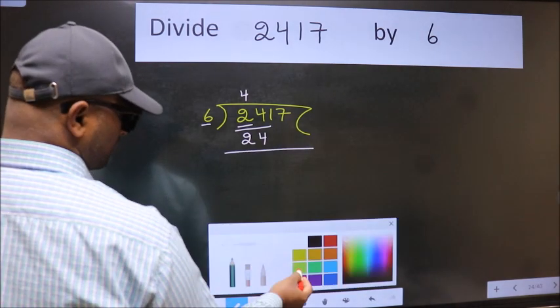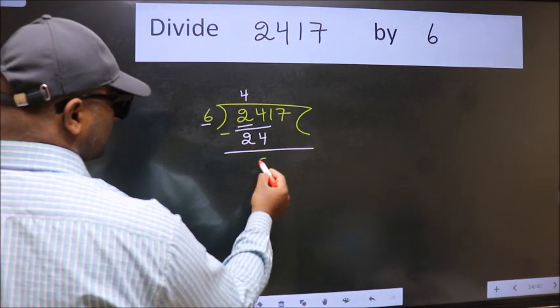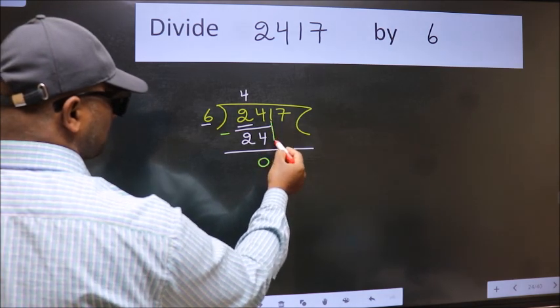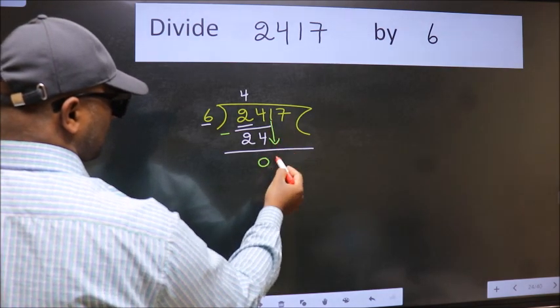Now we should subtract. We get 0. After this, bring down the beside number. So 1 down.